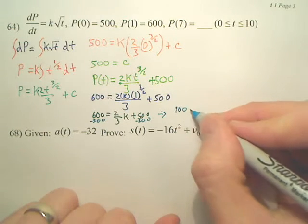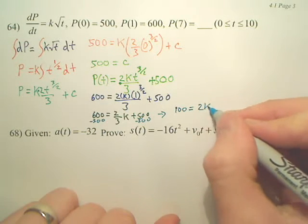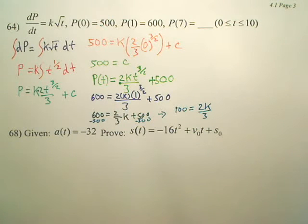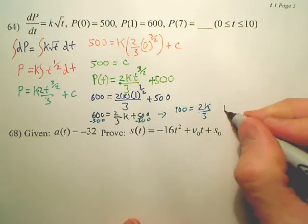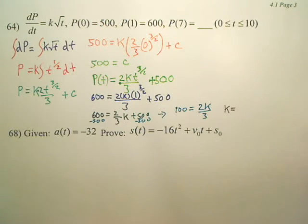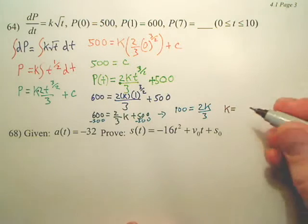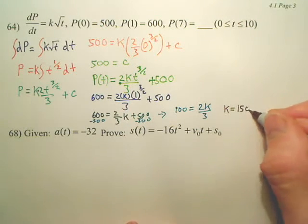Looks like we have 100 equals 2k over 3. Could we make a proportion out of it, or multiply by 3 over 2. There's multiple ways to solve that. Basically, it looks like we're going to get k equaling 300 over 2. 300 divided by 2 is 150. Looks like we're going to get k is 150.